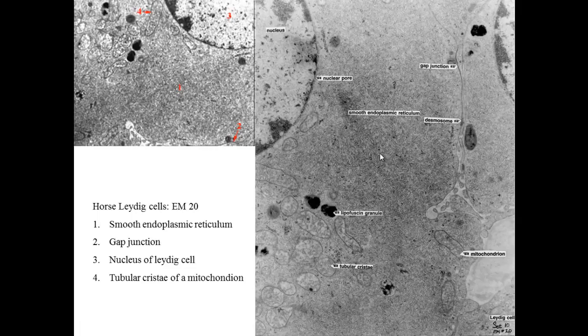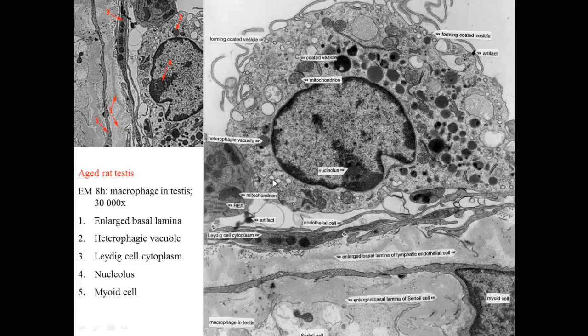Also, the mitochondria have a tubular type cristae, instead of having a typical lamellar, it's little tubes, and so the cristae is tubes.